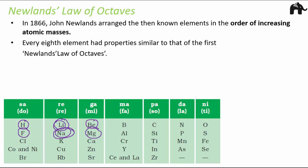That was Newlands' Law of Octaves — named 'octaves' because of the periodicity of every eighth element. Newlands clearly noticed periodicity in the properties of elements. In fact, looking at this table, it references Sa, Re, Ga, Ma, Pa, Dha, Ni — the seven musical notes — used to show that elements with similar properties fall under the same column, just like notes in a musical octave.